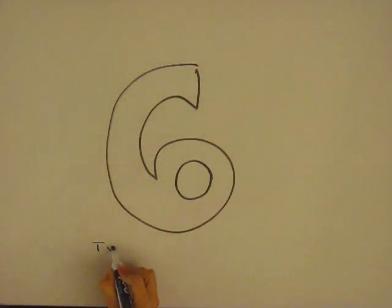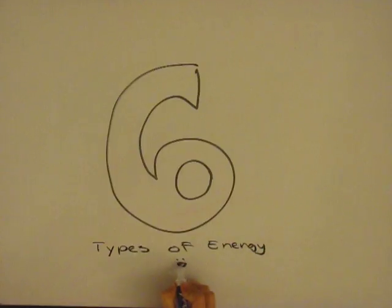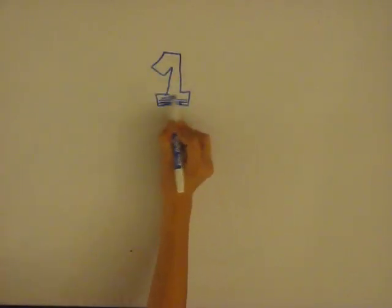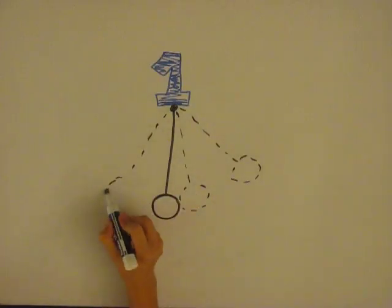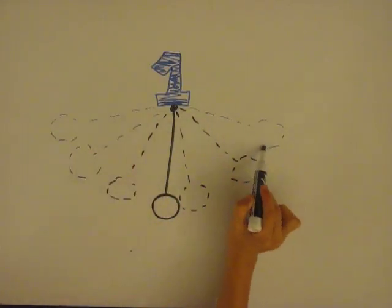There are six types of energy, and the first one I'm going to explain is mechanical energy. Mechanical energy has to do with the movement of an object. When a pendulum swings, it uses mechanical energy.